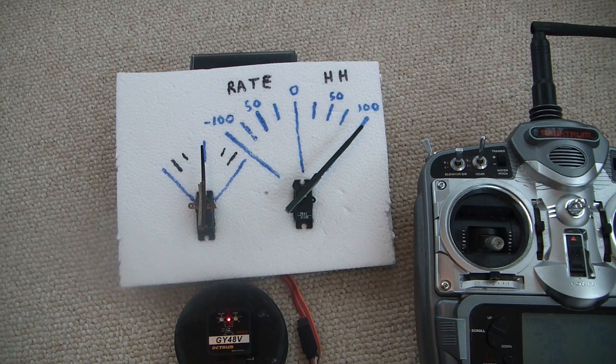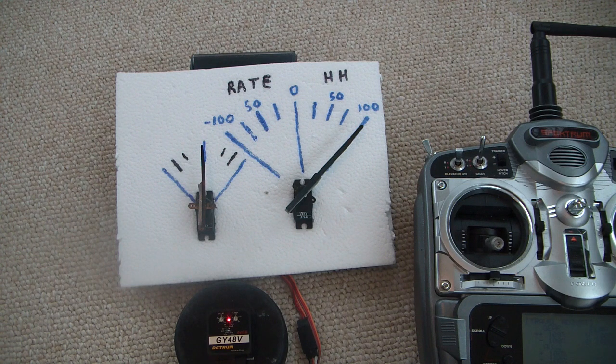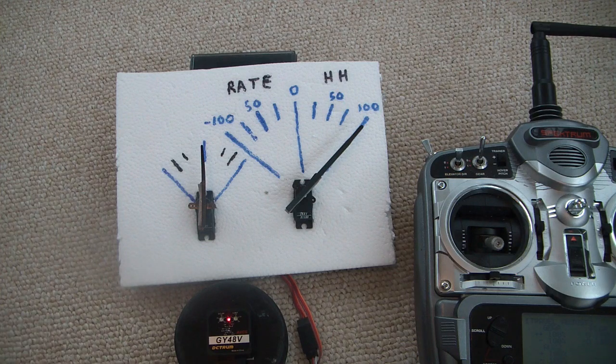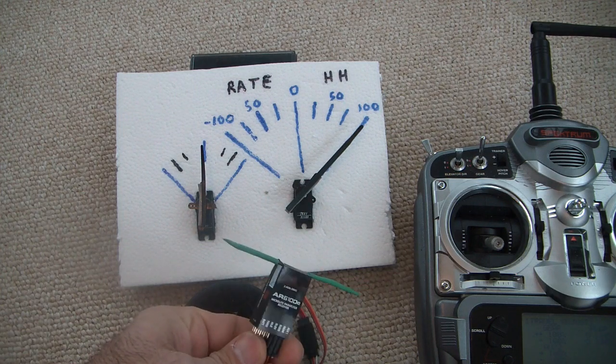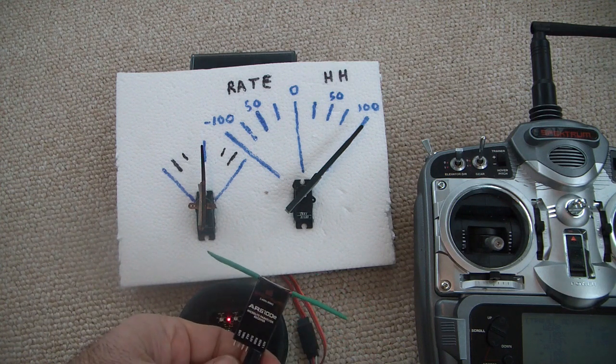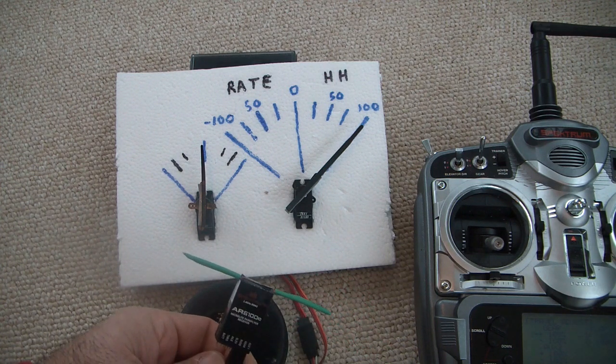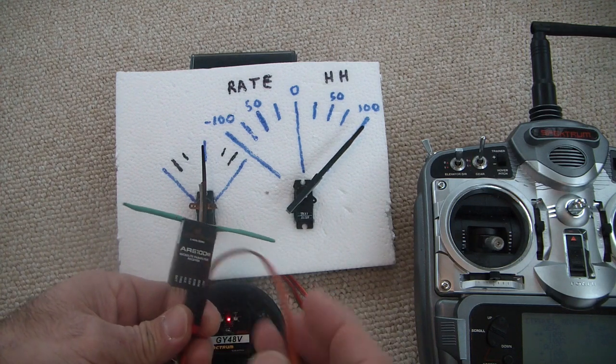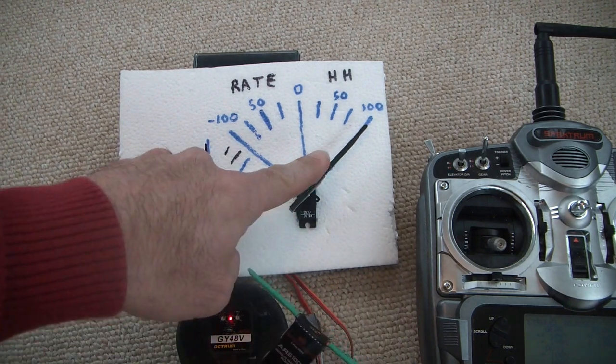I have a little board set up here to demonstrate some of the functionality of this gyro. So I've got my receiver, and what I have is in addition to the gain wire being plugged into the receiver, I've got it hooked up to a Y connector so it's also hooked up to this servo.